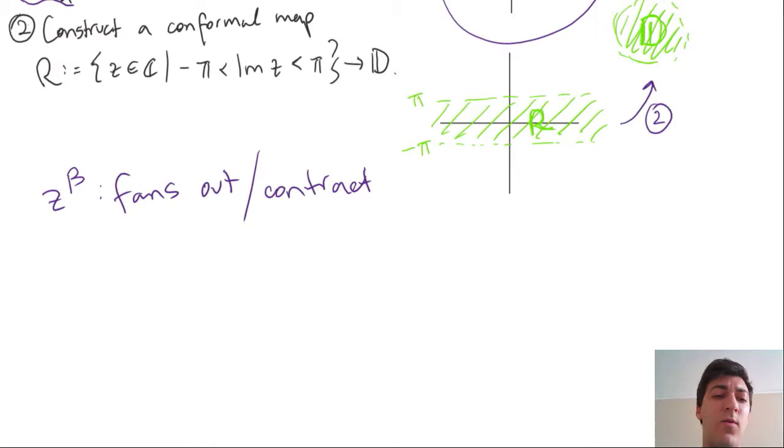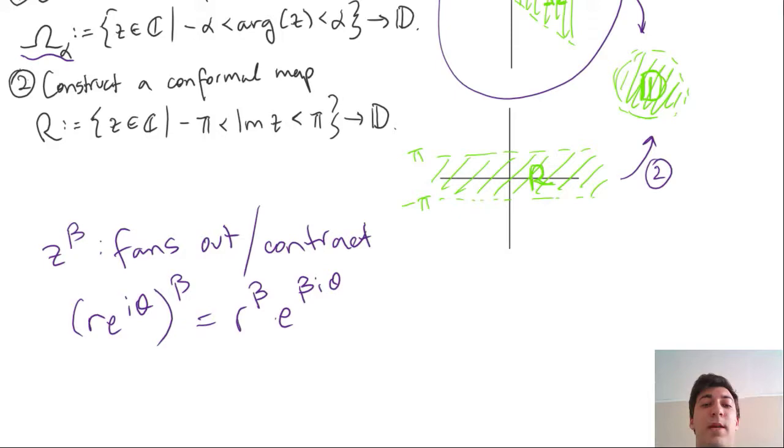We can write a complex number as r e to the i theta, with this argument theta and its radius r. If we raise it to the power beta, then we get r to the beta, so some scaling of the region, and then e to the beta i theta. If we wanted to expand it, we can choose beta large, and if we wanted to contract it, we could choose beta small.